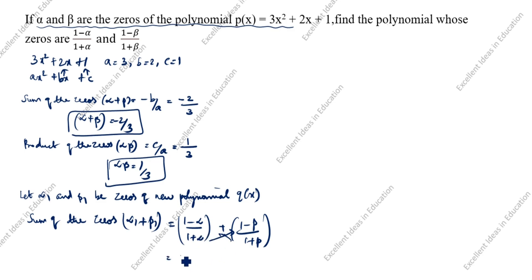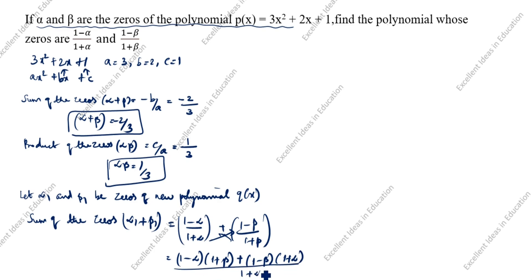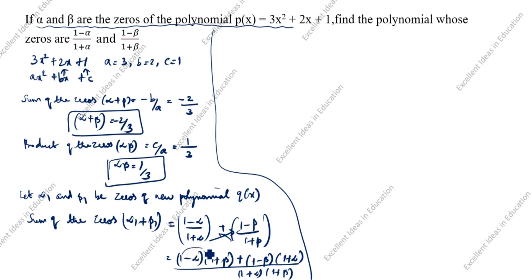Cross multiplying: alpha₁ + beta₁ = [(1 - alpha)(1 + beta) + (1 - beta)(1 + alpha)] divided by (1 + alpha)(1 + beta). Expanding the numerator: (1 + beta - alpha - alpha·beta) + (1 + alpha - beta - alpha·beta).